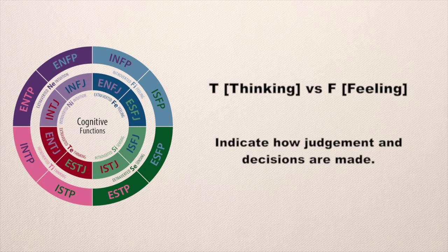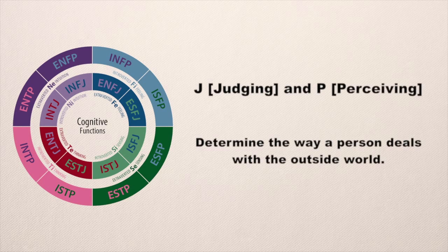The next pair is thinking (T) or feeling (F), which is an indicator of how judgments and decisions are made. Remember that each of these is trying to identify how you work when you interact with others and when you do problem solving, and this will help you understand how you fit into a team. The final pair is judging (J) or perceiving (P), which determines the way a person deals with the outside world.